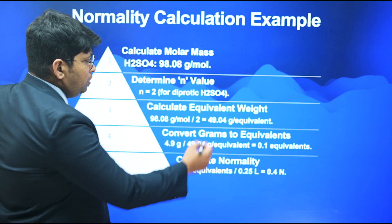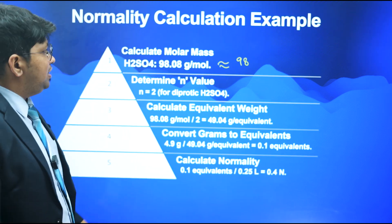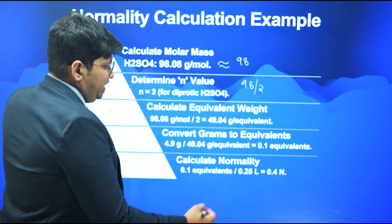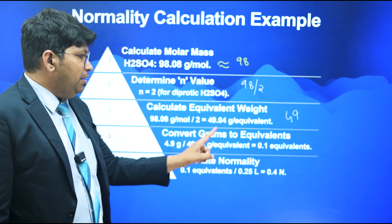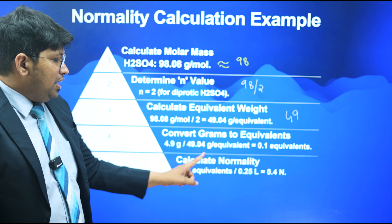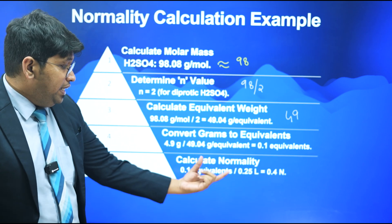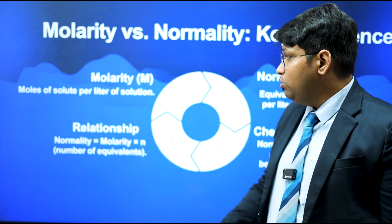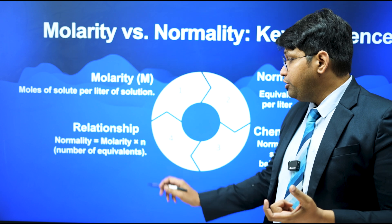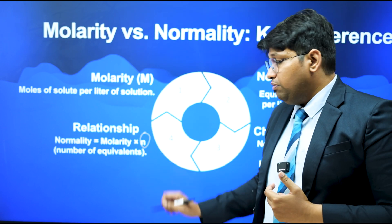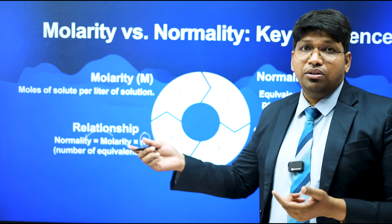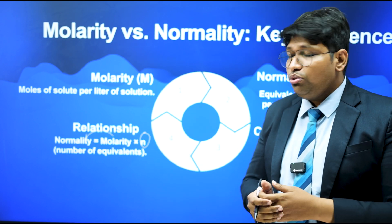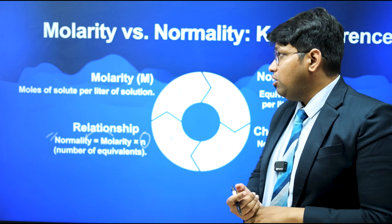For a sample calculation: H2SO4 has molar mass 98 and n-factor 2, so equivalent weight = 98/2 = 49. If 49 grams is one gram equivalent, we calculate normality accordingly — for example, 0.1 equivalents in 250 mL gives 0.4N. The key relationship is: Normality = Molarity × n-factor. For H2SO4, multiply molarity by 2; for HCl, multiply by 1. This formula saves time in competitive exams.